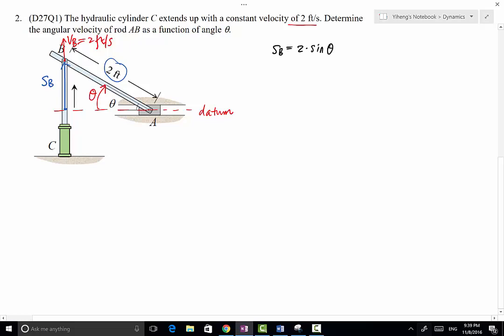Therefore, we're going to take the time derivative of this entire equation. On the left-hand side, we have dS_B/dt. On the right-hand side, we have 2 times d(sin θ)/dt. For the right-hand side, we're going to use chain rule. So this becomes d(sin θ)/dθ, because sine theta is actually a function of theta, not a function of t directly. So this equals d(sin θ)/dθ times dθ/dt.